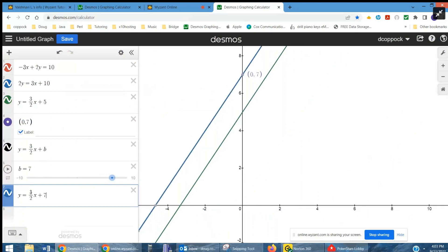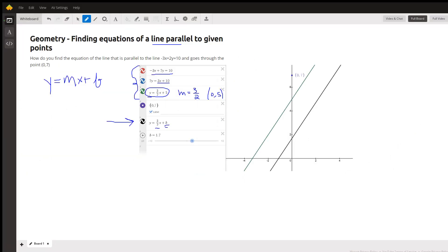So your equation is actually y equals 3 halves x plus 7. There you go. Now if we had a different point to go through that wasn't on the y-axis, then you'd have to use point slope, the point slope formula.